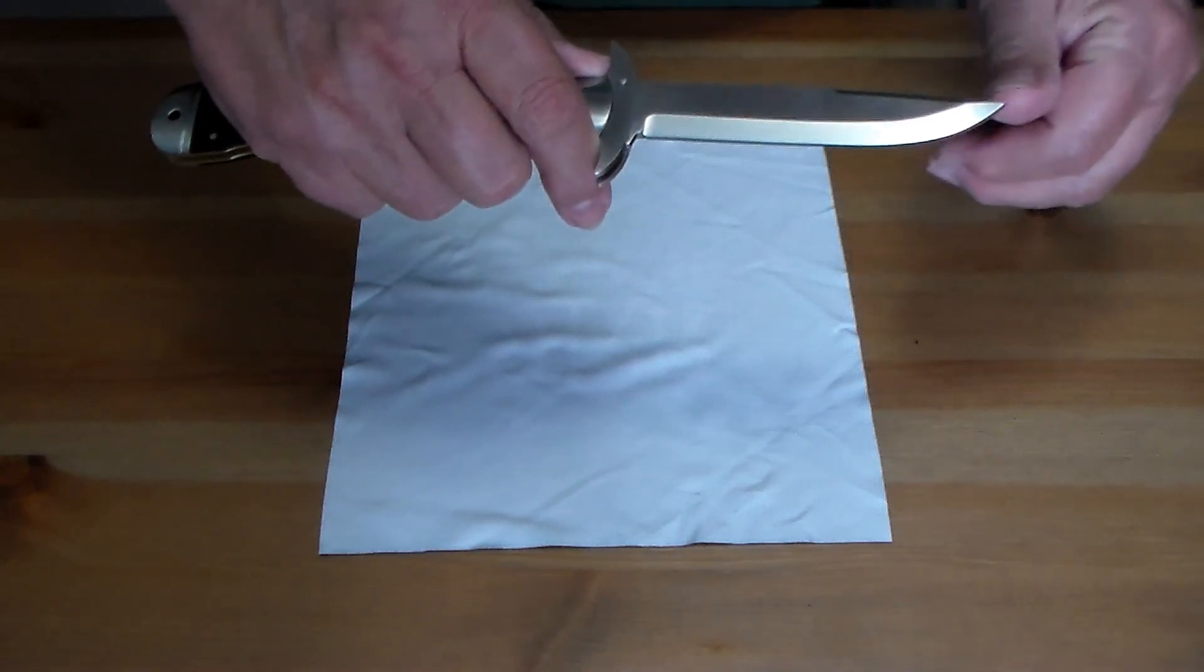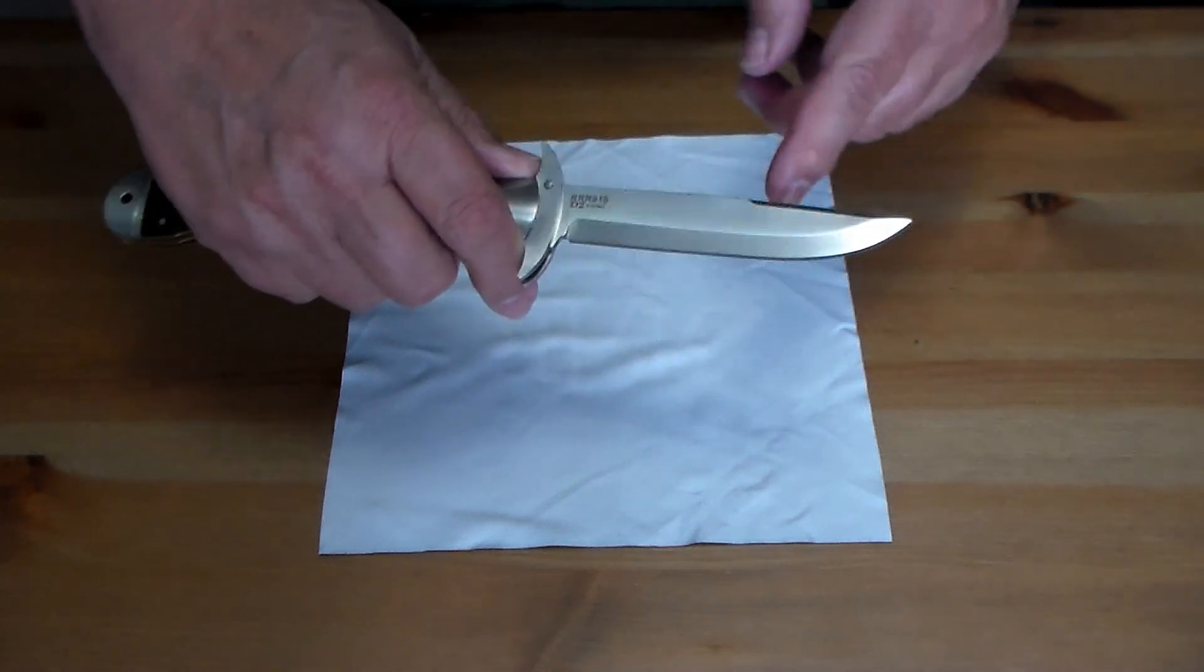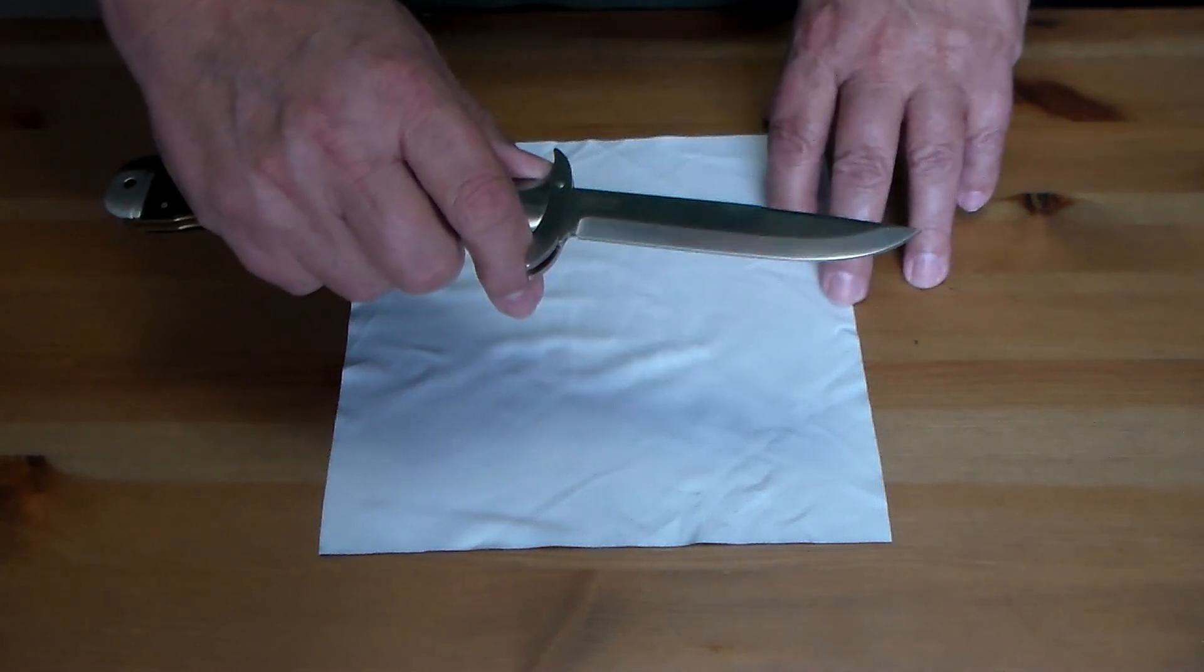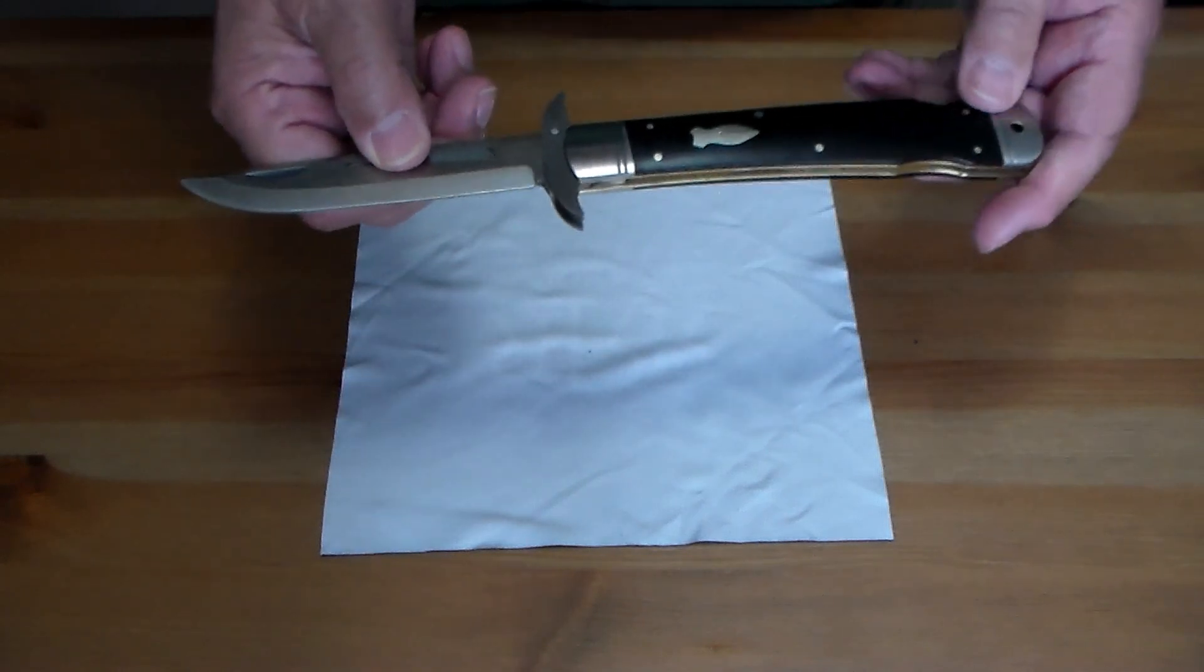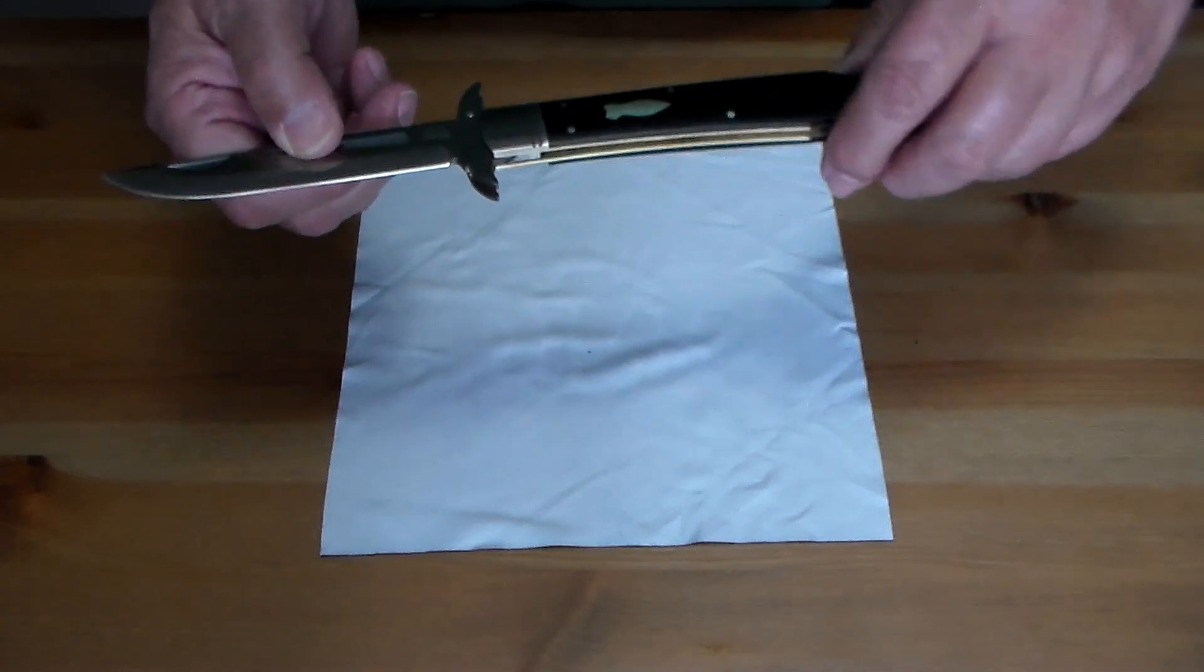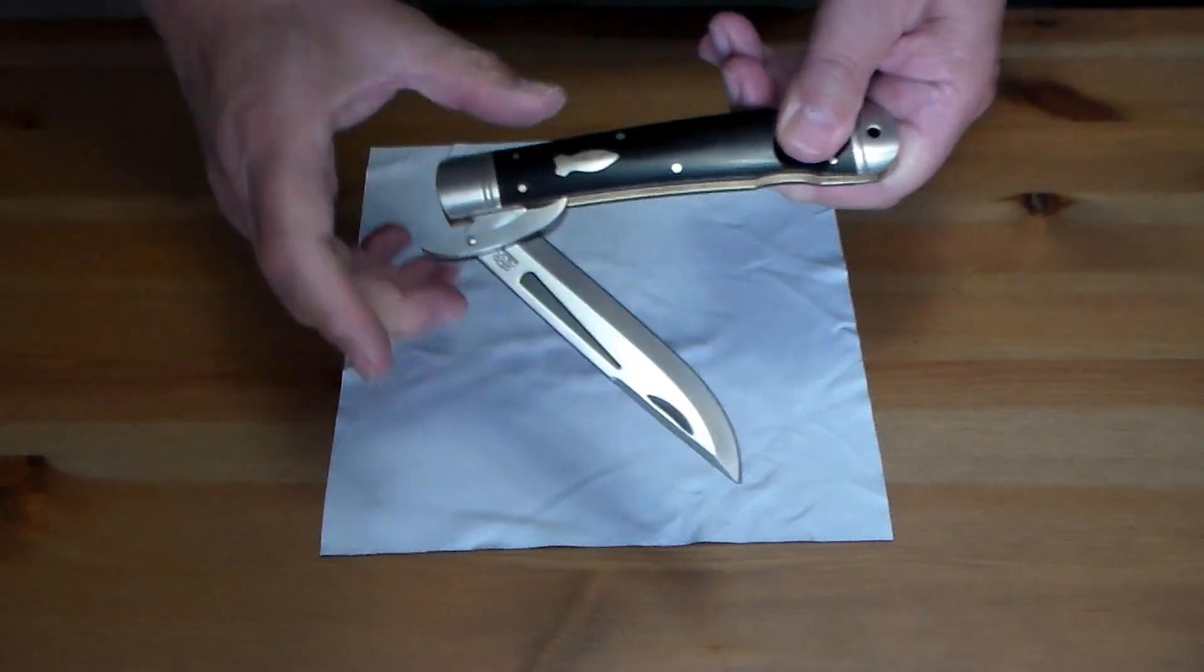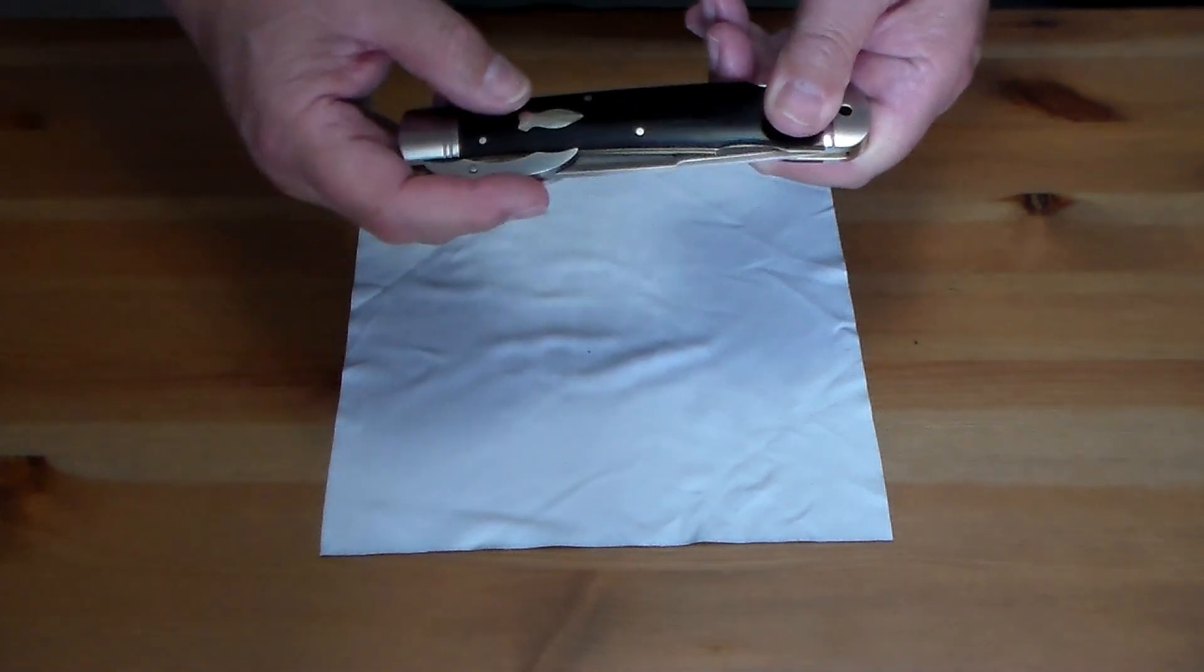It's got a straight back with a swedge and then a saber grind. Now it's a lockback, and as you close it you see the guard swings down towards flush on the scales there.